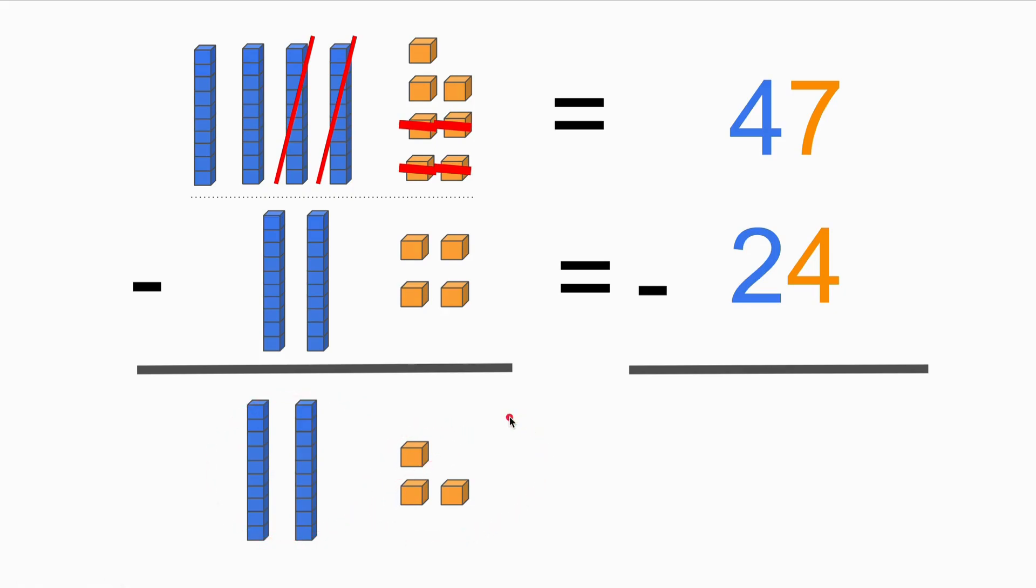Now let's take a look at the numbers. That's exactly the same. We have 47 just in numbers instead of blocks, and we have 24 here. If we use seven minus four here at the ones place, we get three.